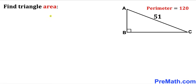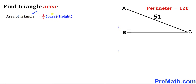Our very first step, since we are interested in calculating the area of triangle ABC, is to recall the area of a triangle formula: area equals one half times base times height. We know that AB is our height and BC is the base, so we must find the value of both the height and the base.